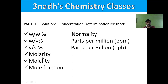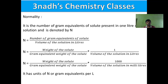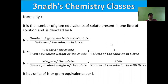First, I am going to discuss normality. Normality is the number of gram equivalents of solute present in one liter of the solution, and is denoted by N. The mathematical formula for normality is: number of gram equivalents of solute divided by volume of solution in liters. We can also rewrite this as weight of the solute divided by gram equivalent weight of the solute, multiplied by 1 over volume of solution in liters.